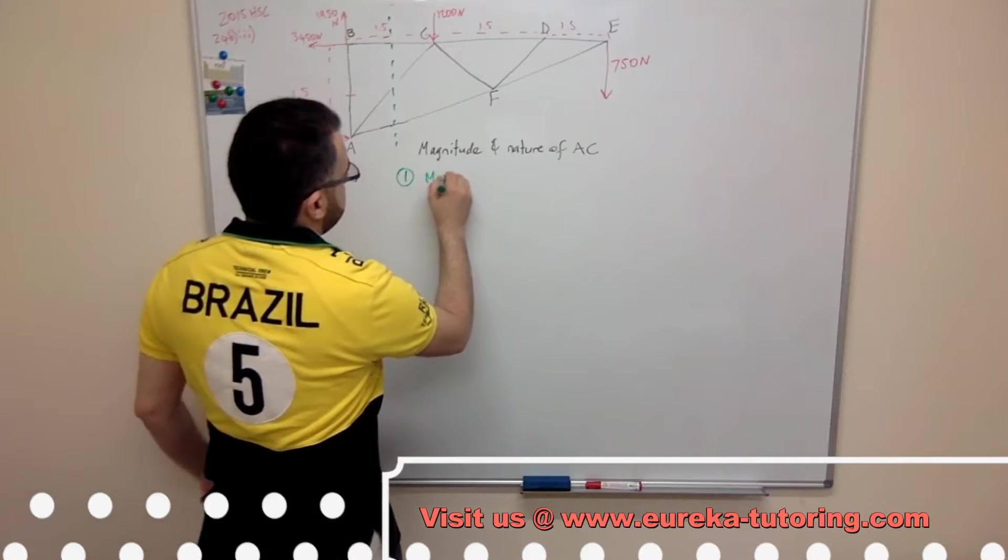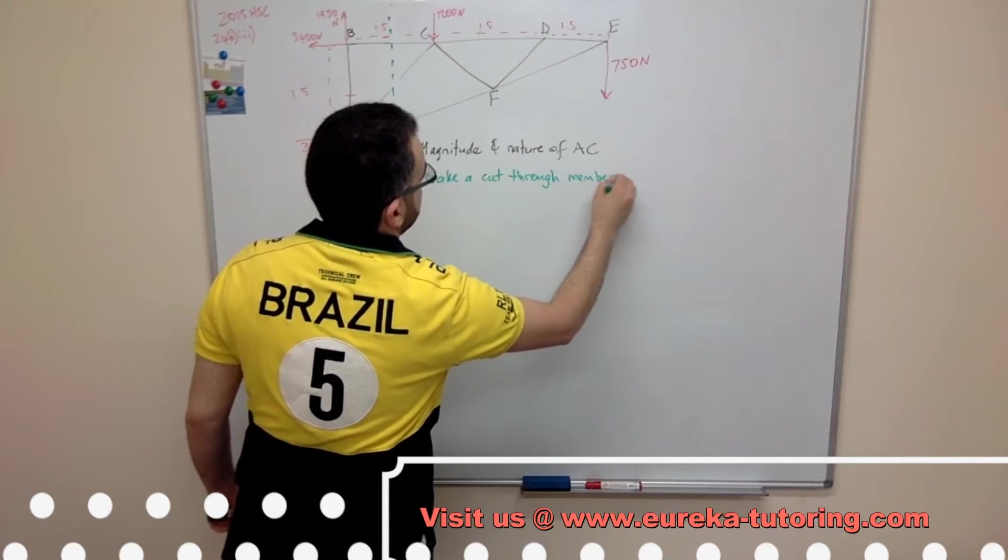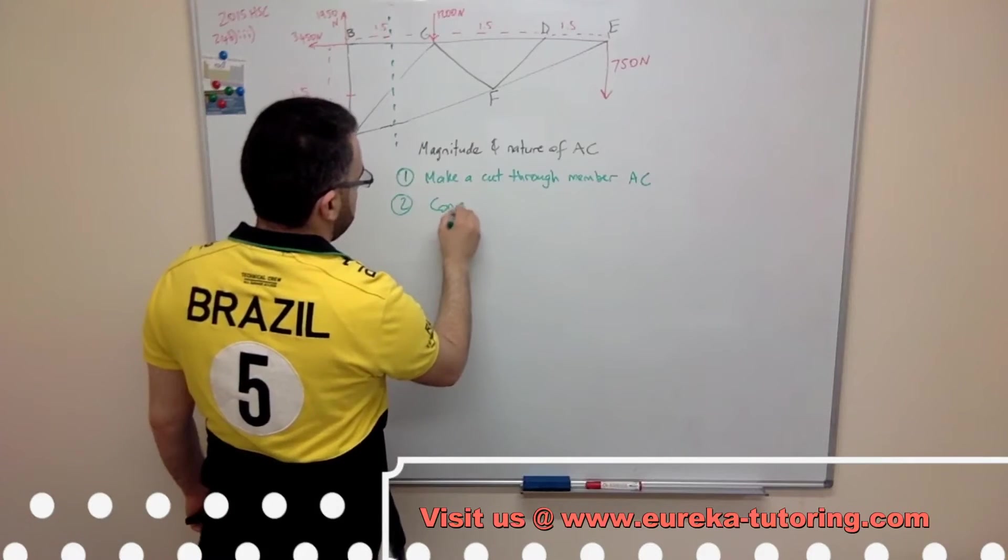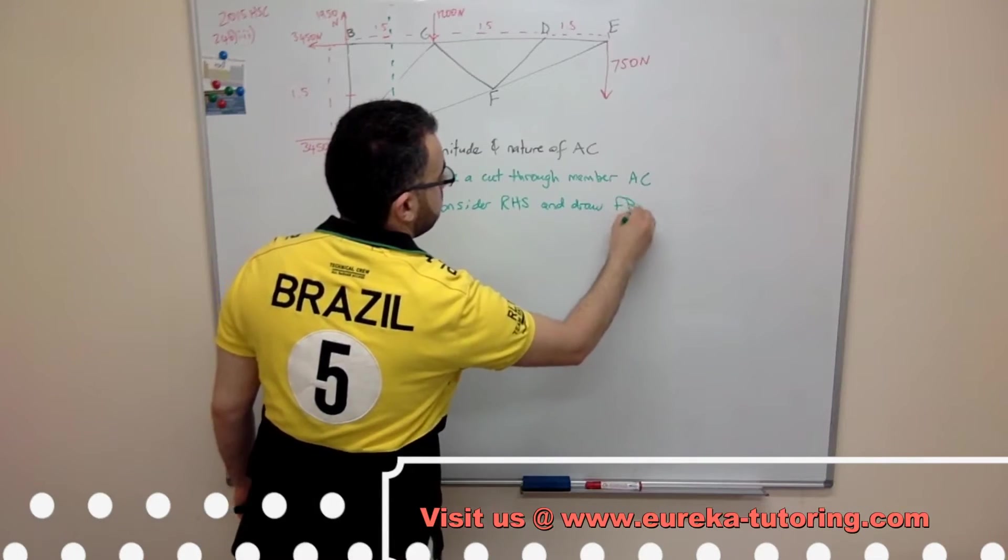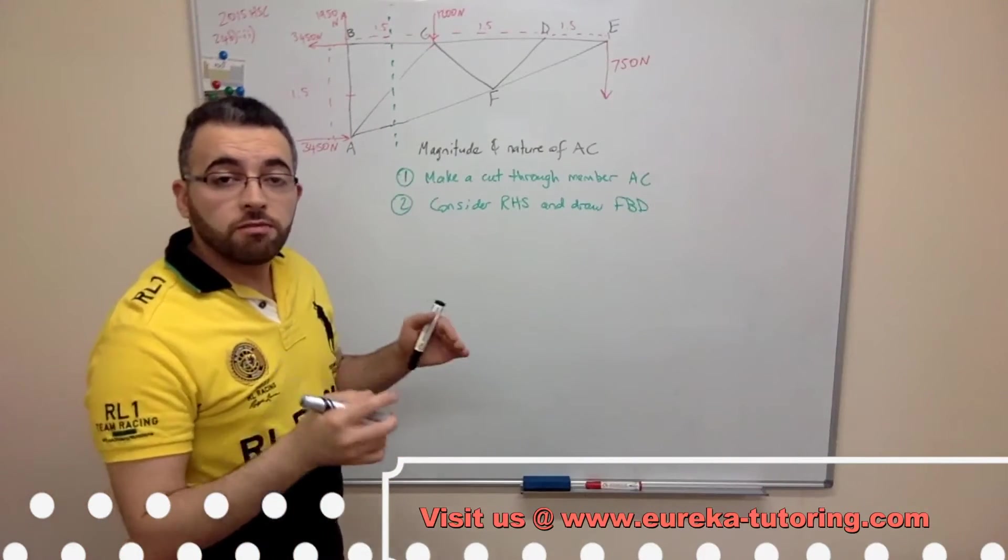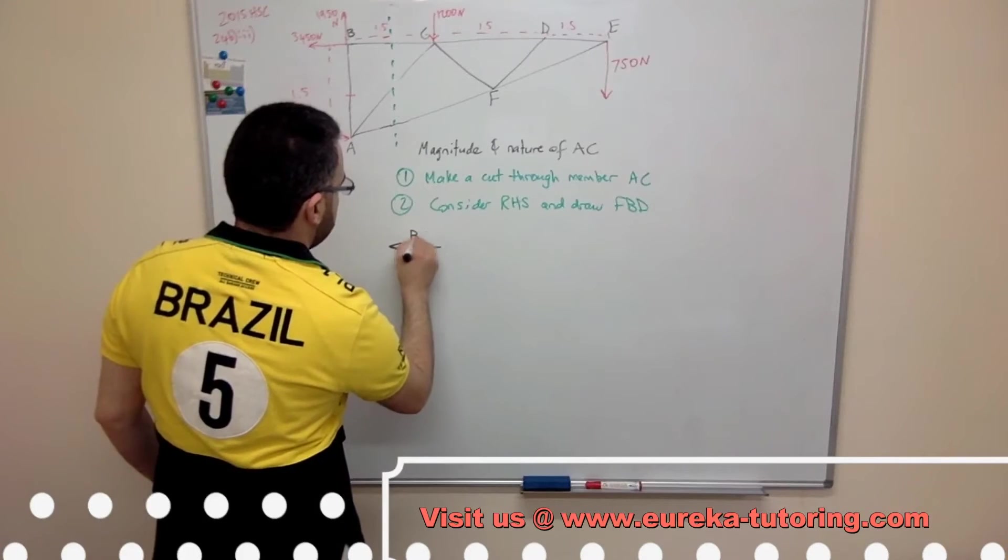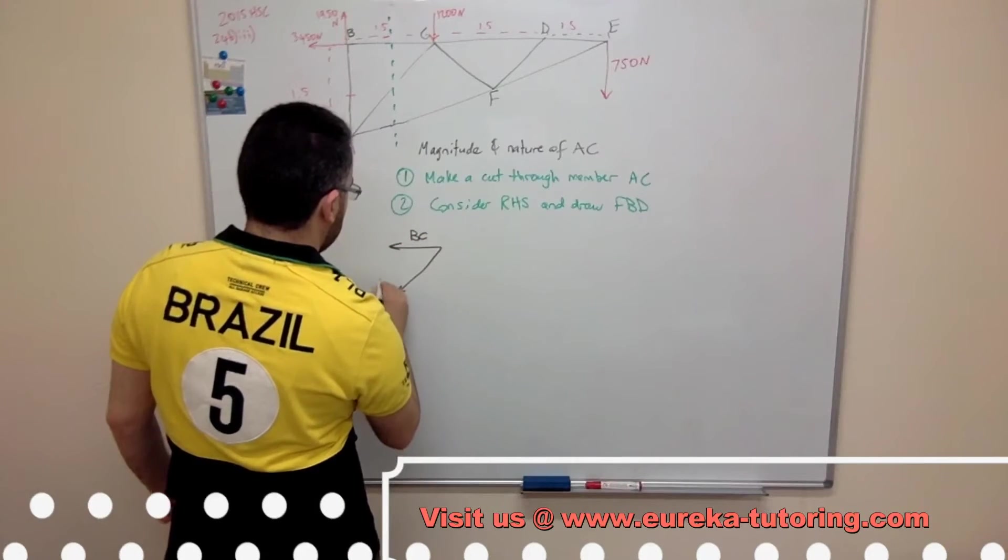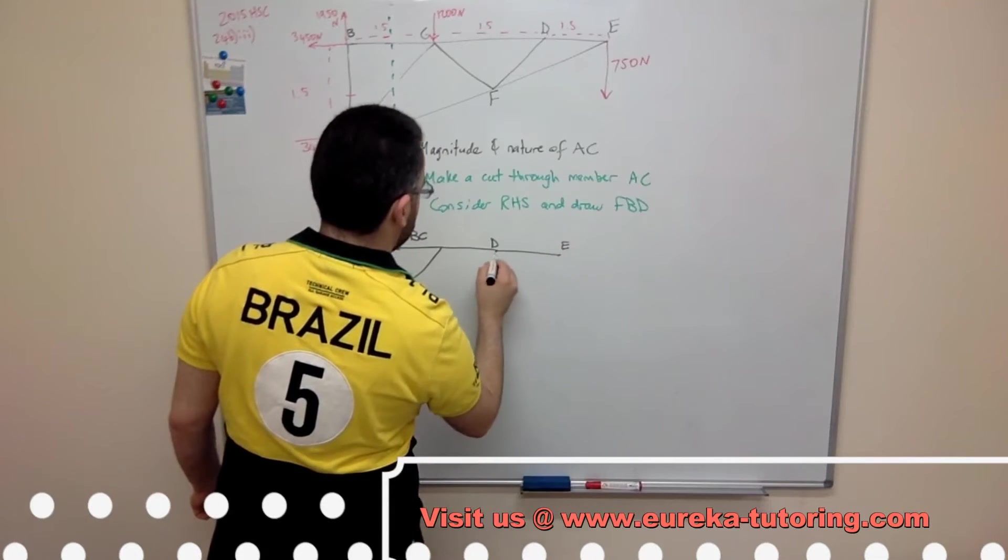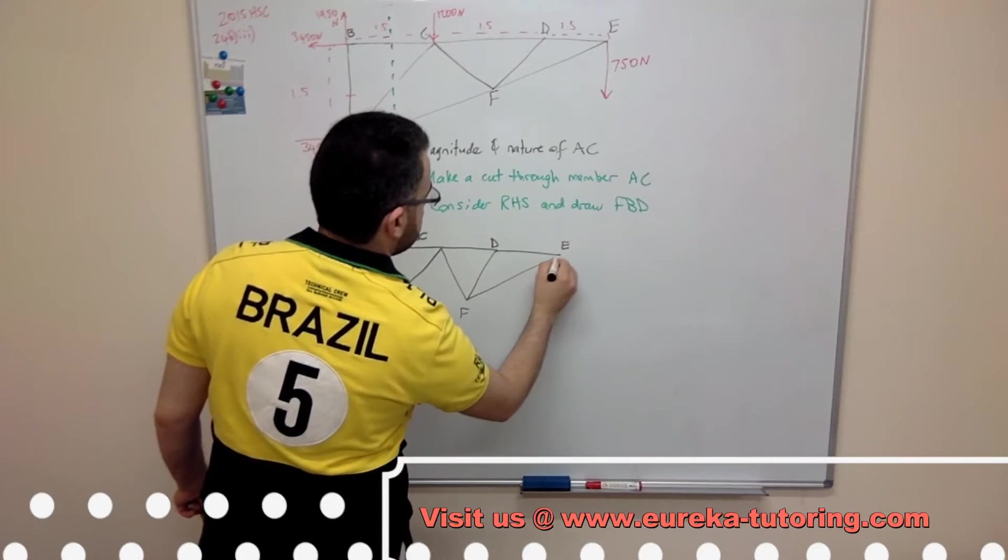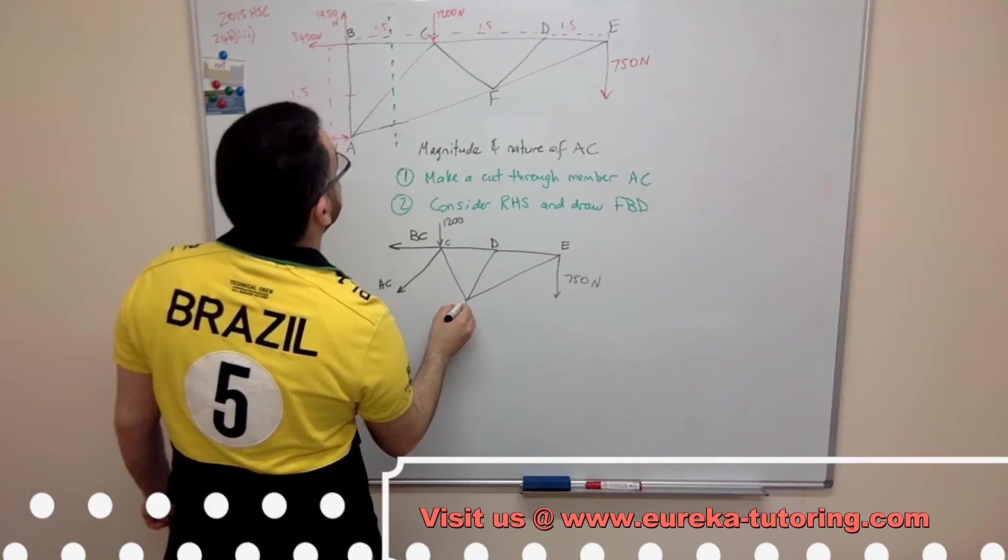First step: make a cut through member AC, consider right hand side and draw free body diagram. Now when we make a cut those members that have been cut will automatically create a force. So we will draw a free body diagram. We got DC that's a force. We got AC that's also a force. This is D, E, F. This is 1200. I also have a force here which is AF.